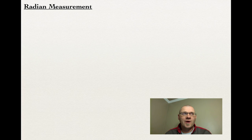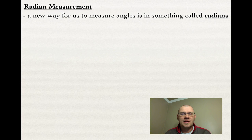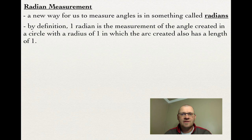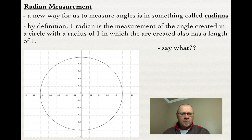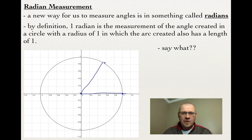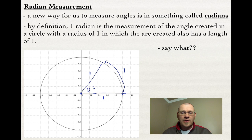Our first topic is radian measurement. A new way for us to measure angles is in something called radians. By definition, one radian is a measurement of the angle created in a circle with a radius of 1, in which the arc created also has a length of 1. Looking at this diagram, we've got a circle with a radius of 1. The arc length from here to here is the same as the radius. So if the radius has a value of 1 and the arc length also has a value of 1, this angle — we use the Greek letter theta to represent angle — is 1 radian.